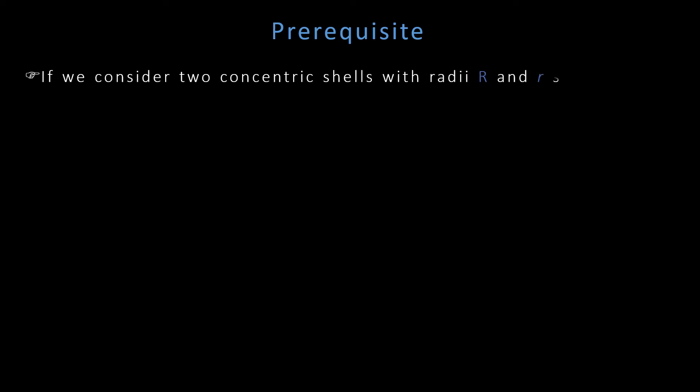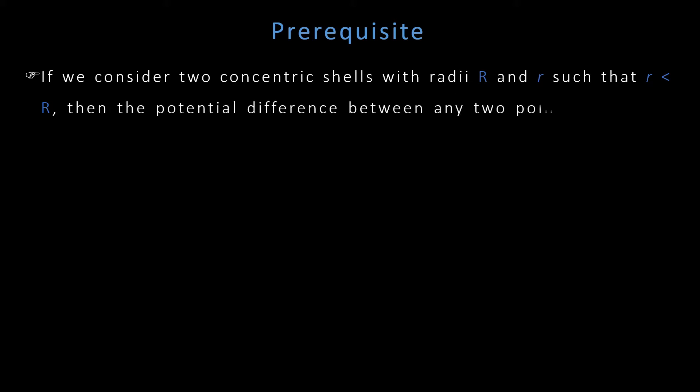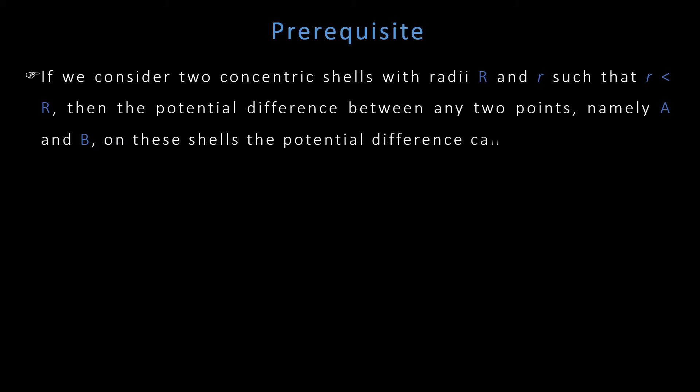Hello students. Today we will see the construction and working of the 1d graph generator. In the previous video we saw the principle of the 1d graph generator. Today we will see how to construct it and how it works. To understand today's topic we need to know the principle, which says that if you have two concentric shells of different radii — one with radius smaller, the other with radius capital R — the potential difference between outer and inner shell is kq times one by radius of smaller shell minus one by radius of bigger shell.